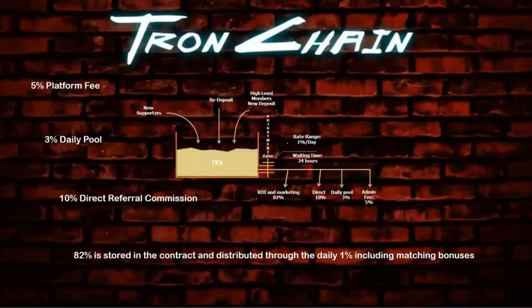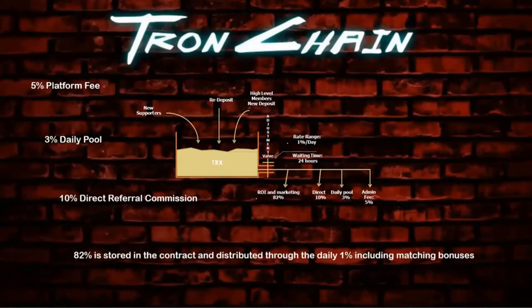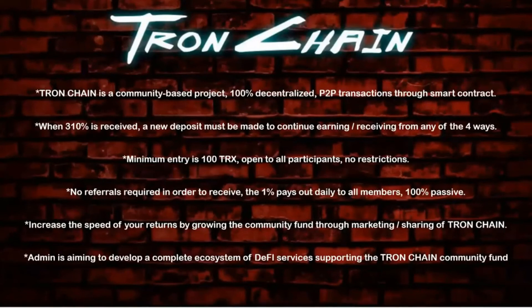Looking at the algorithm distribution of the 100% of funds coming in: 5% is a platform fee, 3% goes to the daily pool, 10% is paid out instantly as direct referral commission, and 82% of every TRX coming in is stored in the contract and distributed to every single community member through daily 1% returns including matching bonuses. This means that 84% of what you do goes towards the entire TronChain community, and 84% of what the entire TronChain community does goes towards you — this is a true community build.